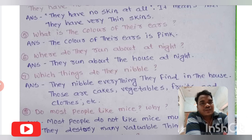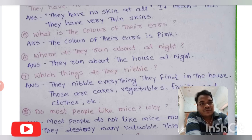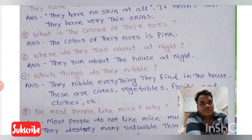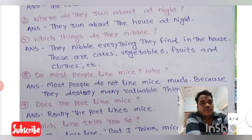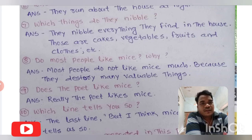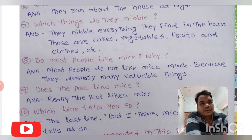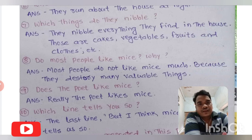What is the color of their ears? The answer is: the color of their ears is pink. Where do they run about at night? They run about the house at night. Which things do they nibble? They nibble everything they find in the house — cakes, vegetables, fruits, and clothes.